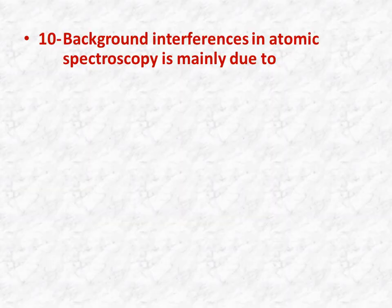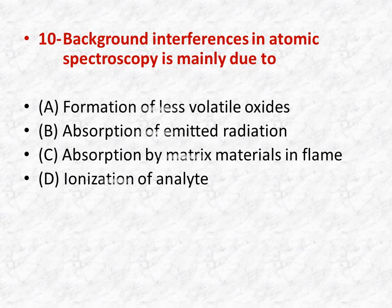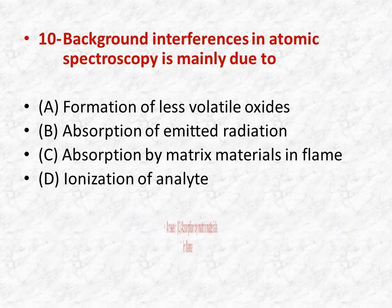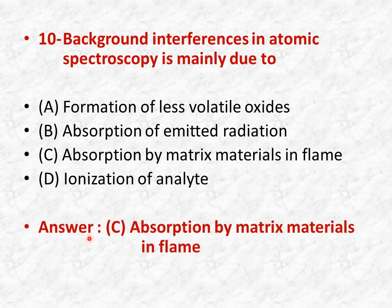Question number ten: background interferences in atomic spectroscopy are mainly due to — options: A is formation of less volatile oxides, B is absorption of emitted radiations, C is absorption by matrix materials in the flame, D is ionization of analyte. The right answer is C — background interferences are due to absorption by matrix materials in the flame.